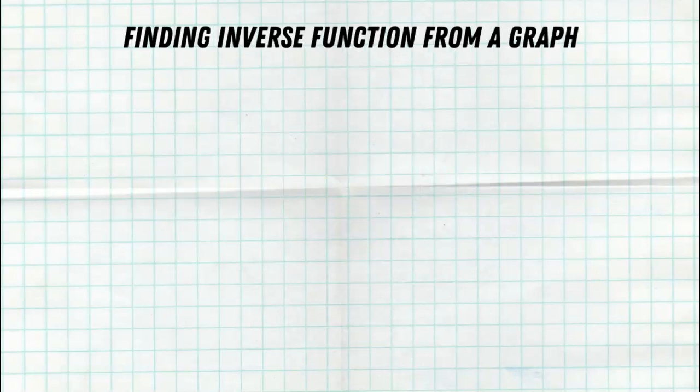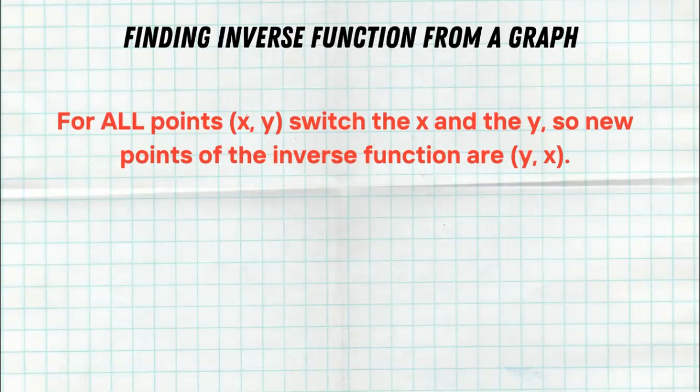What about finding inverse functions from a graph? Well, this is also really easy. For all points (x, y), all you have to do is switch your x and your y. So the new points of the inverse function are (y, x). So if I have a point like (2, 3) on my original function, in the inverse function graph it's going to be (3, 2). You can think of this as a reflection across the line y = x, because if you just switch all of your x's and y's you're basically reflecting across y = x — and that's exactly what an inverse function is. So if you have a graph, all you have to do is take any point, switch the x and y, and you have the new point on the inverse function.